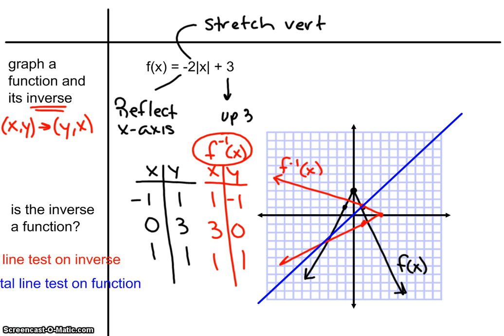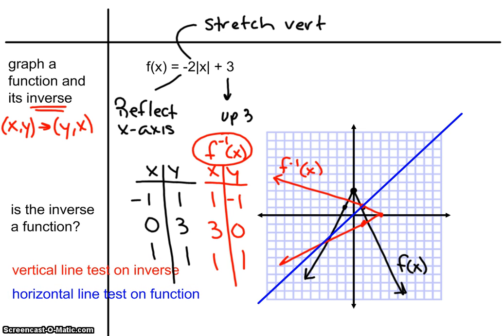Now, we want to check and say, is it a function? Is my inverse a function? So there's two things we could look at. One, you could just do a vertical line test on your original function, or on the inverse. And because of the fact that I intersect my inverse more than once with that vertical line, that would tell me that the inverse is not a function.